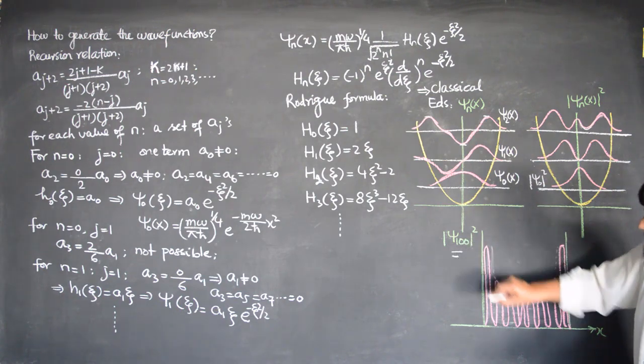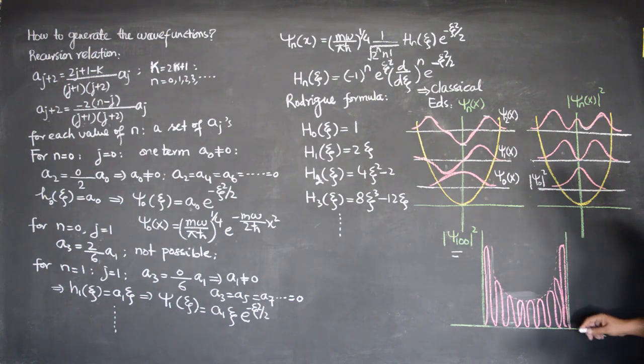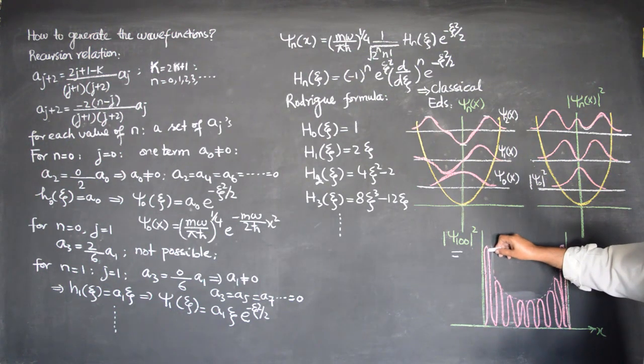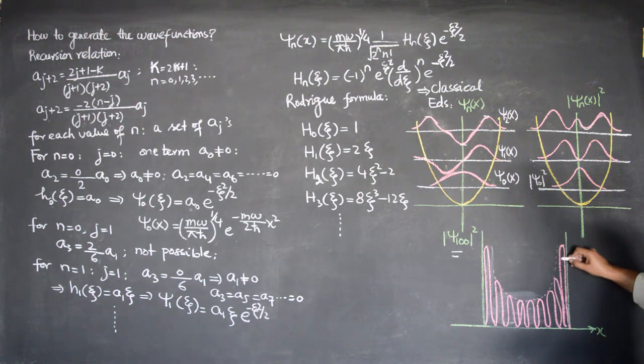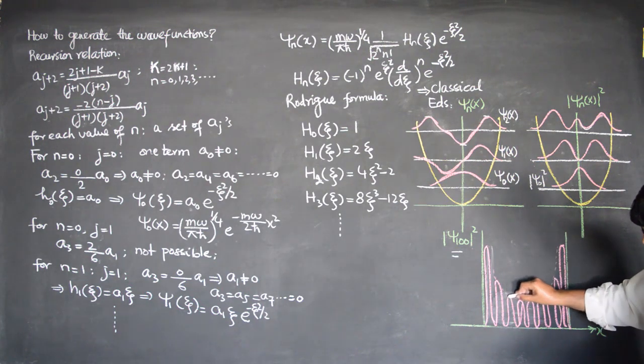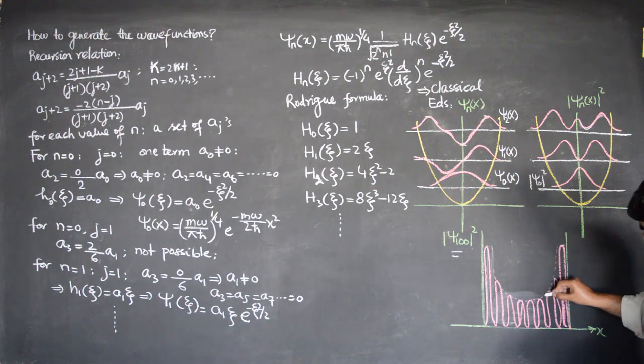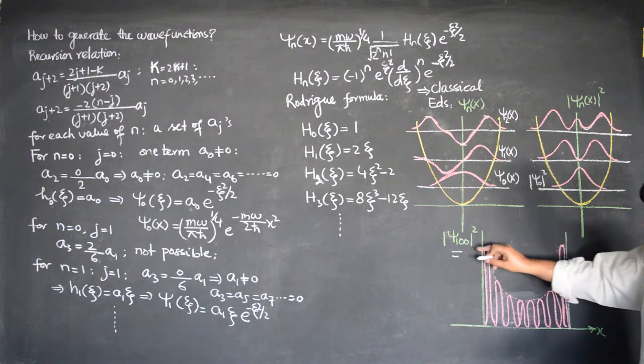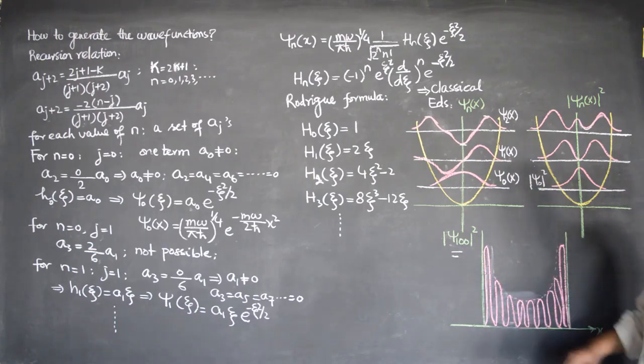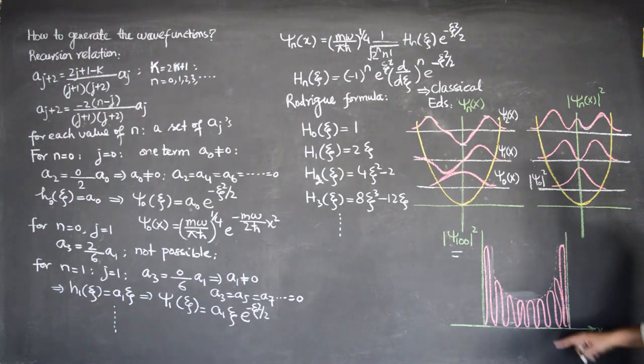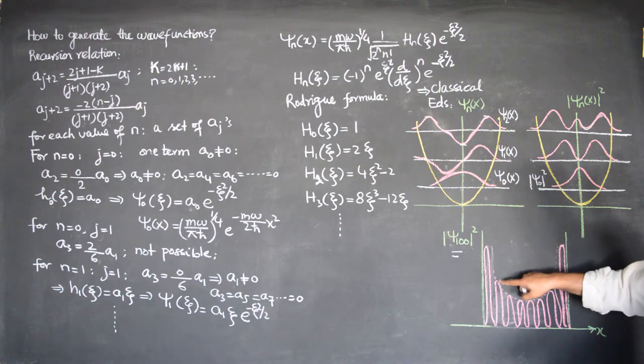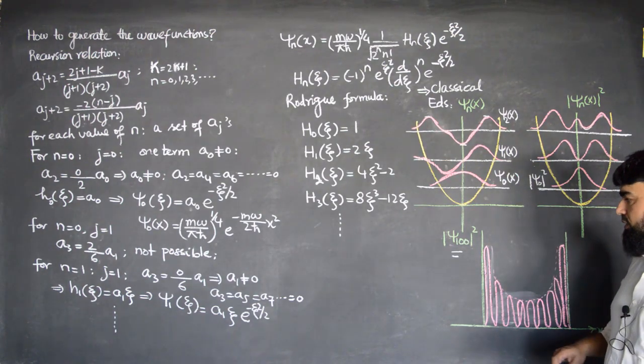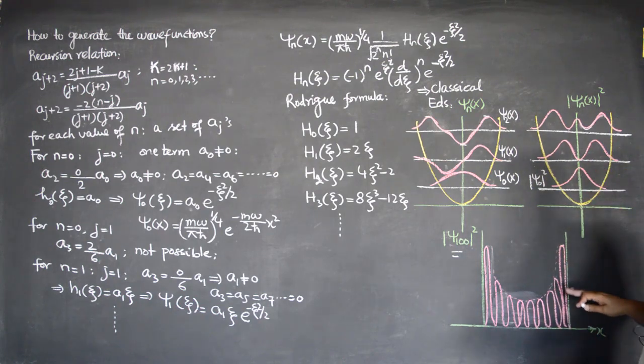As we go to higher and higher number, then this and this will go up while this will become less in magnitude. Here we can see for ψ_100, if we plot through computer, the first one and the last one are very high while the rest are getting lower and then they are reciprocating themselves. For ψ_100, we are having the probability density like this. This way we can plot our wave functions for the harmonic oscillator.